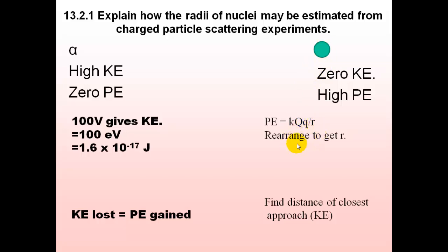So you basically need to rearrange this to get r. This is the distance of closest approach. And the next page is an example of this.